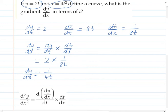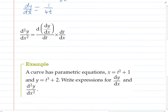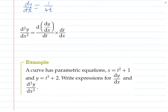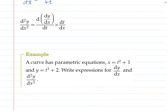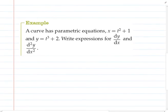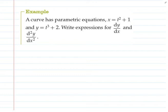So underneath here you'll see there's a formula for finding the second derivative of a parametric term. What we have to do is differentiate the derivative with respect to t, and then multiply it again by the derivative of t with respect to x. So in this example we're going to do that.